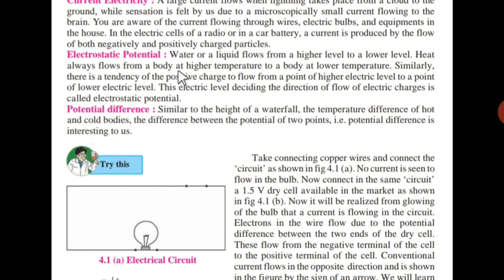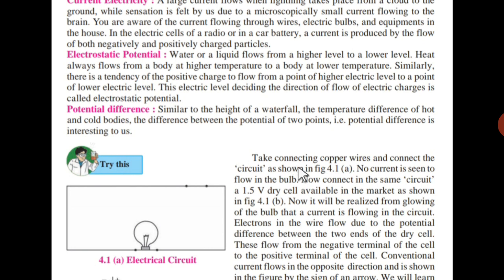What is meant by electric potential? Water or a liquid flows from a higher level to a lower level — like in a waterfall. Heat always flows from a body at higher temperature to a body of lower temperature. Similarly, there is a tendency for positive charge to flow from a point of higher electric level to a point of lower electrical level.